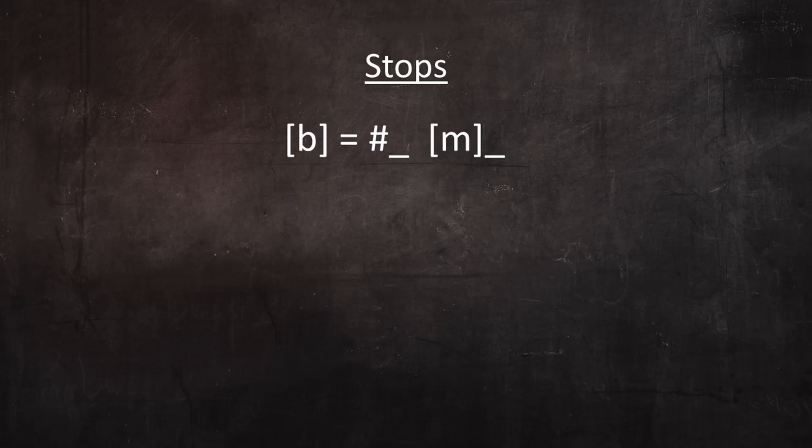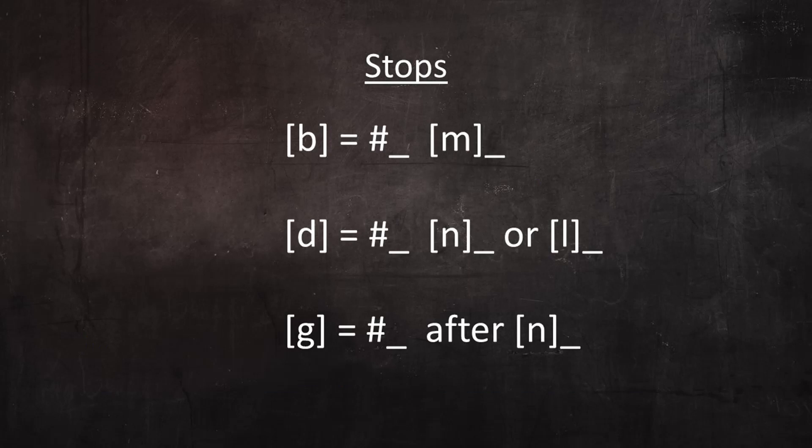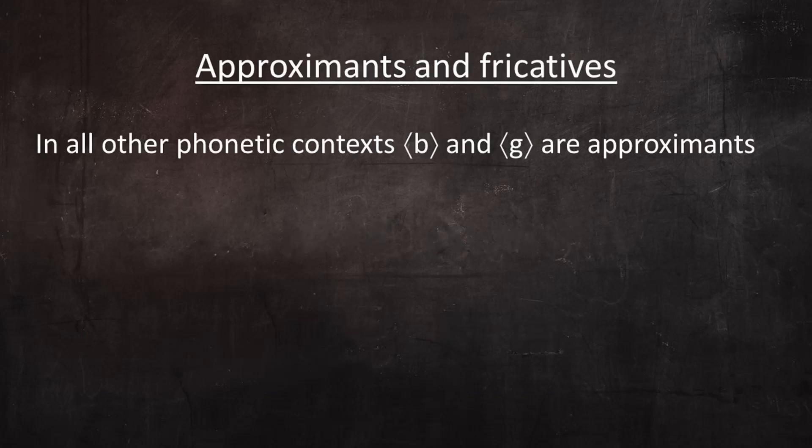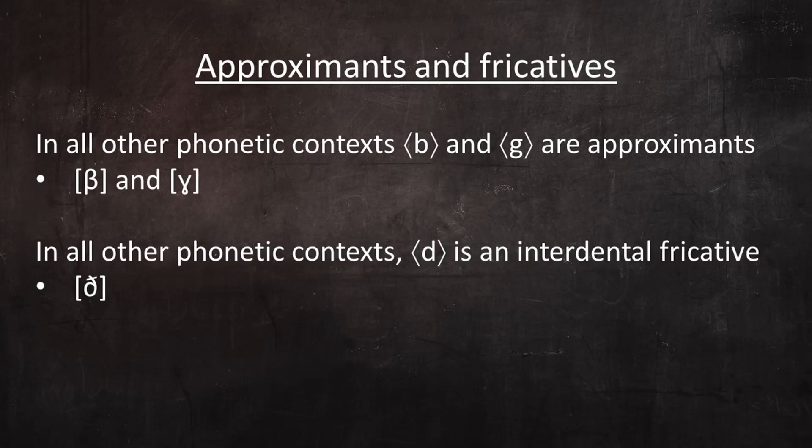B is a stop at the beginning of an utterance, or immediately after the M sound. D is a stop at the beginning of an utterance, or immediately after N or L. It's important to know that just like Spanish T, the stop version of Spanish D is pronounced with a tongue on the back of the front teeth. And G is a stop at the beginning of an utterance, or immediately after N. In all other phonetic contexts, B and G are approximants rather than stops, which means that the parts of the mouth that form these sounds only come near each other but don't actually touch. And in all other positions, D is an interdental fricative.